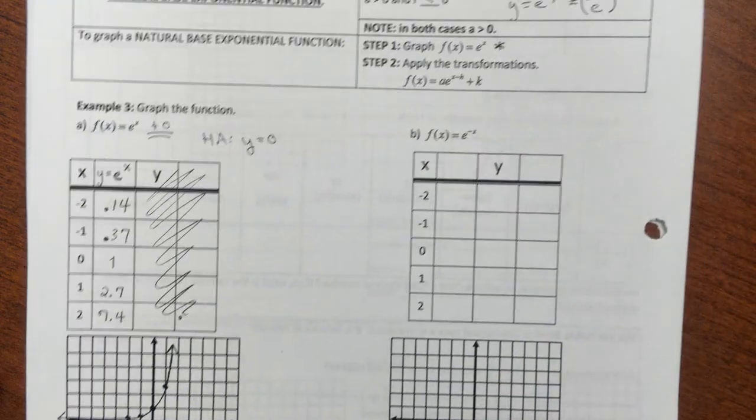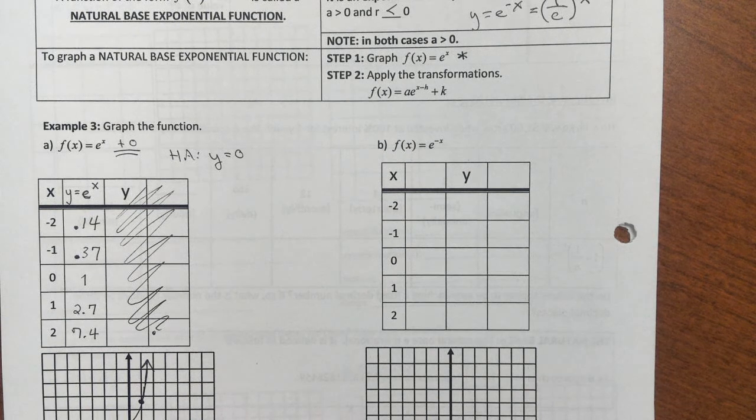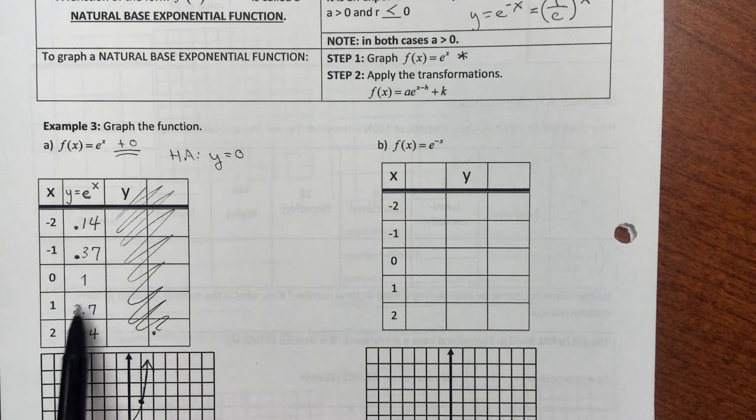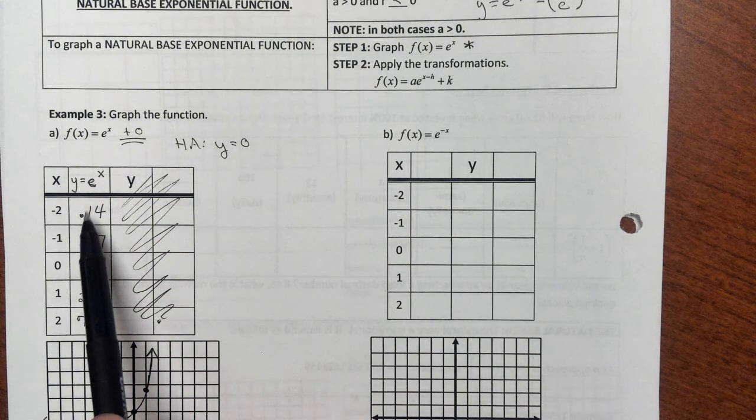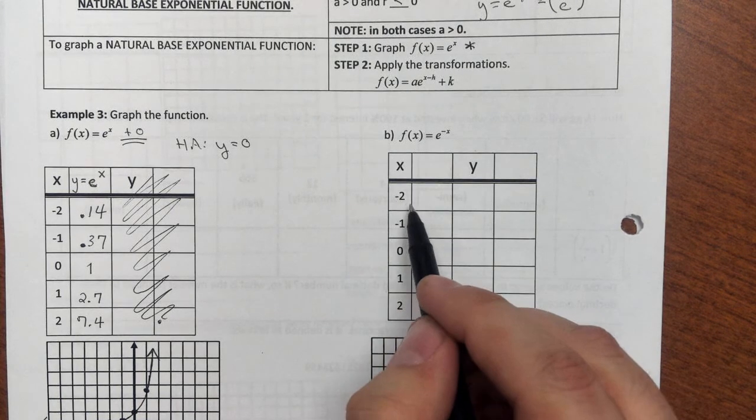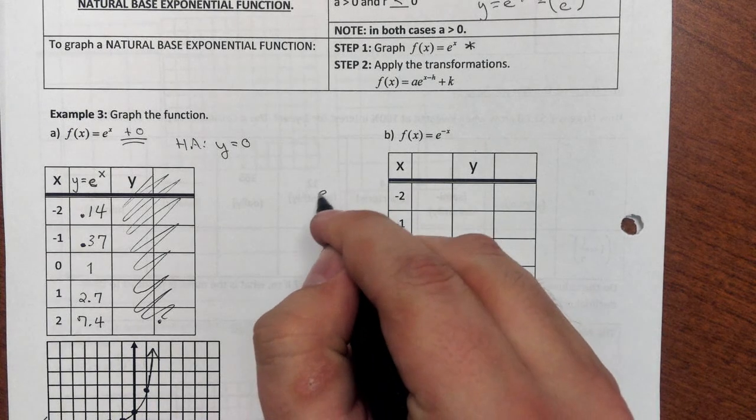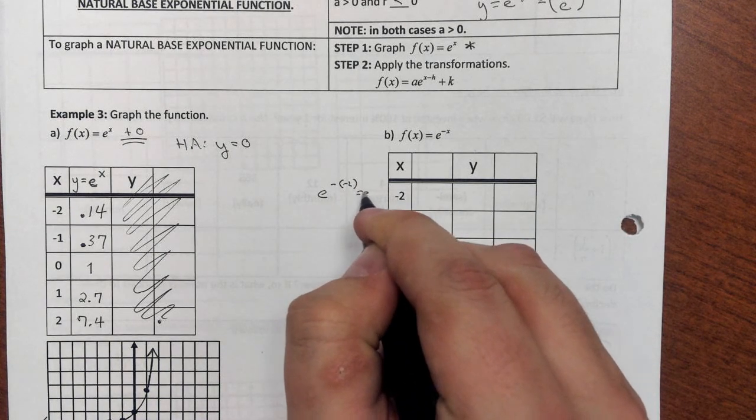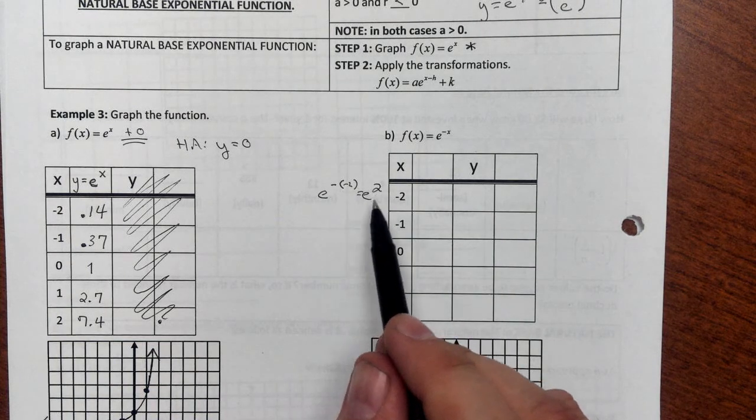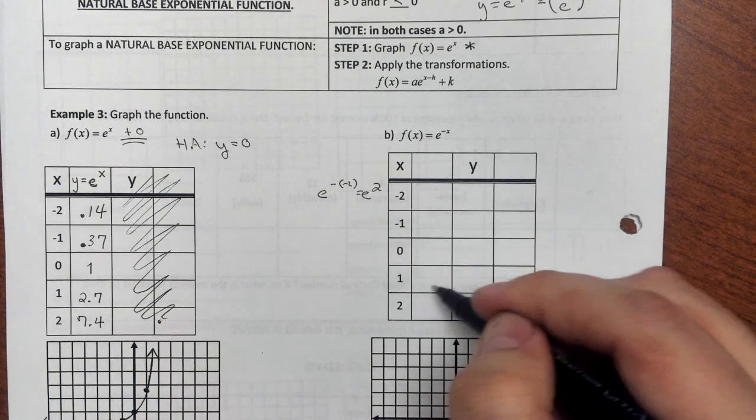Now the next thing I'm asked to graph over here is f(x) equals e to the negative x. Well, if I put a negative sign in my exponent, what that's going to do is just switch around these outputs. So when I say e to the negative second, when x is negative 2, when x is negative 2, I'll have e to the negative negative second, which is e squared. If I put a negative 1, I'll have e to the negative negative 1, which is e to the first. So I just switch these values in this table over here to come up with this.